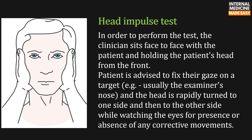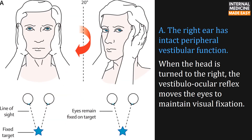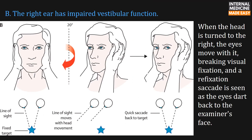To perform the test, the clinician sits face-to-face with the patient, holding the patient's head from the front. The patient is advised to fix their gaze on a target, usually the examiner's nose, and the head is rapidly turned to one side and then the other while watching the eyes for the presence or absence of corrective movements. If the right ear has intact vestibular function, the eyes move to maintain visual fixation when the head turns right. If the right ear has impaired vestibular function, the eyes move with the head and a refixation saccade is seen as the eyes dart back to the examiner.